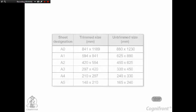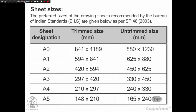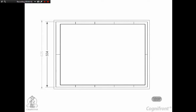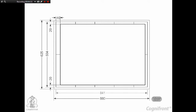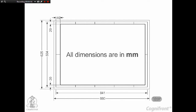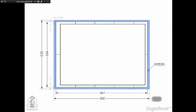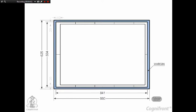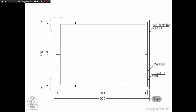Sheet layout and sheet sizes: the preferred sizes of drawing sheets recommended by the Bureau of Indian Standards (BIS) are given as per SP46-2003. The layout of the drawing on a drawing sheet should be done in such a manner as to make it reading easy and speedy. The figure shows an A1 size sheet layout; all dimensions are in millimeters. Margin lines are provided in the drawing sheet. Prints are trimmed along these lines; after trimming, the prints would be of the recommended trimmed sizes.